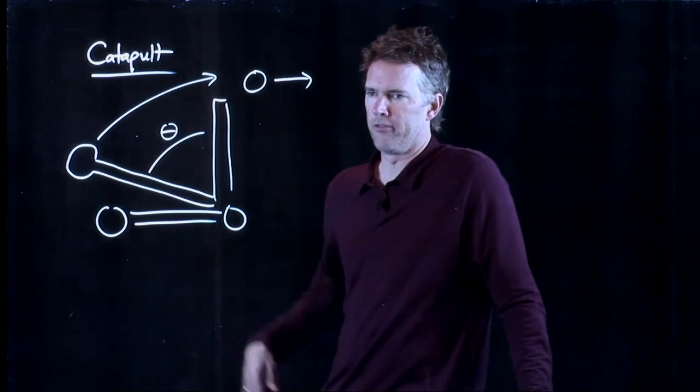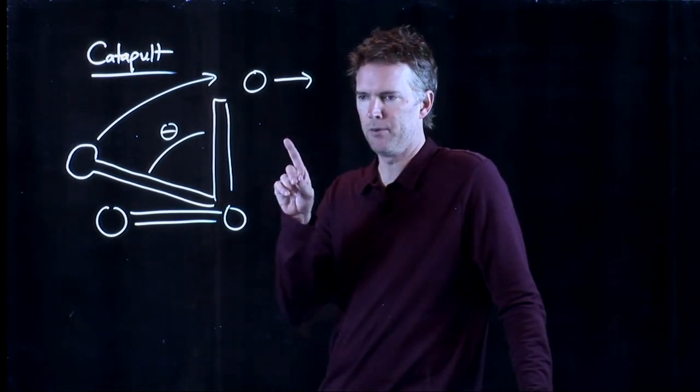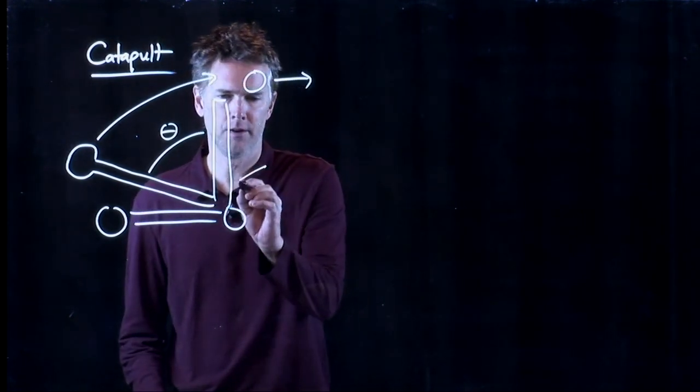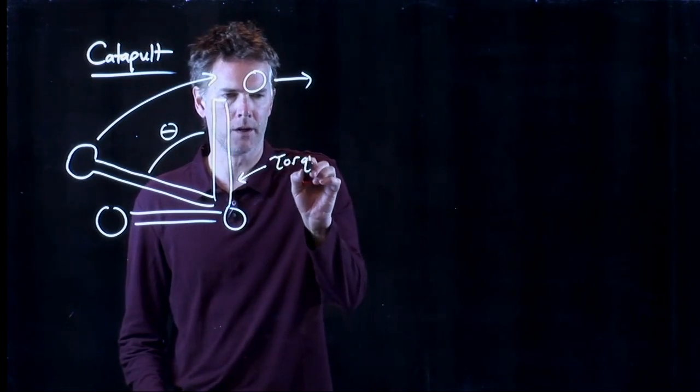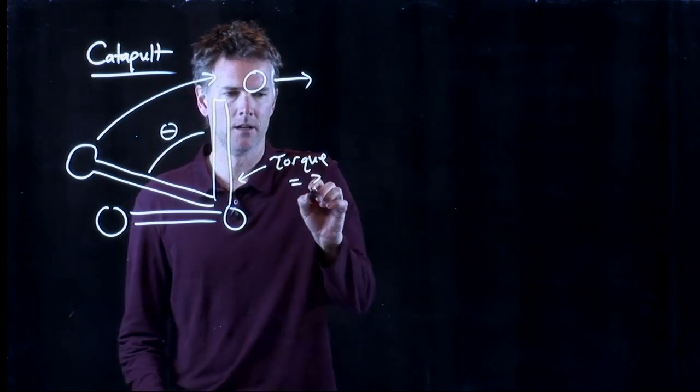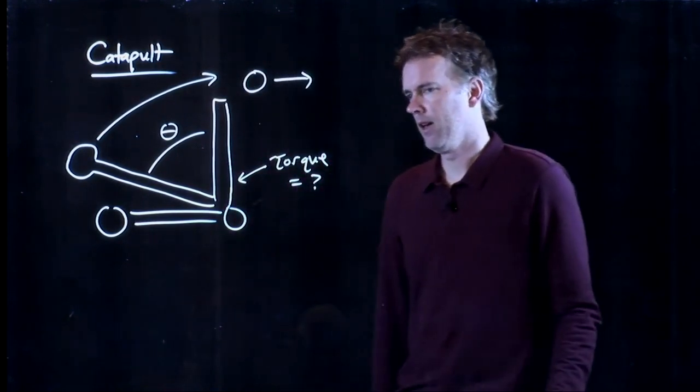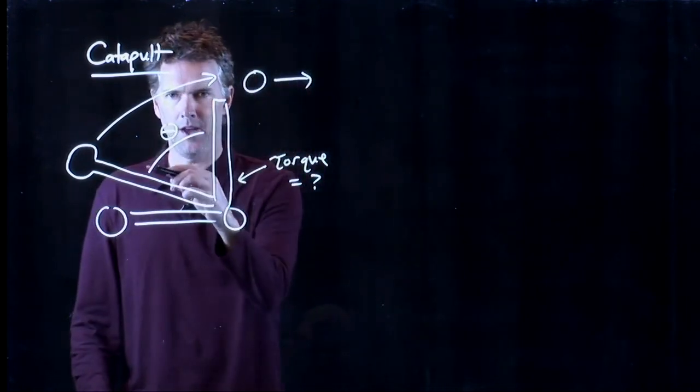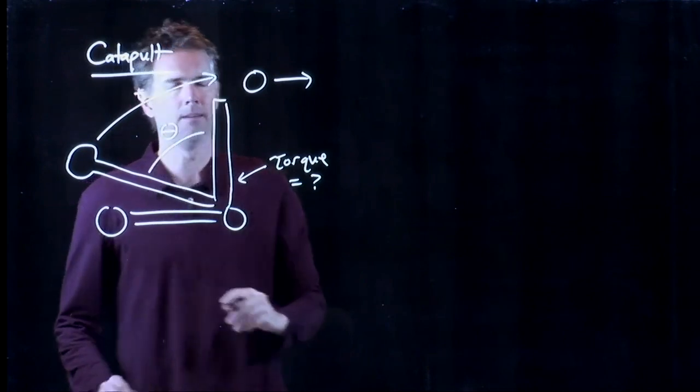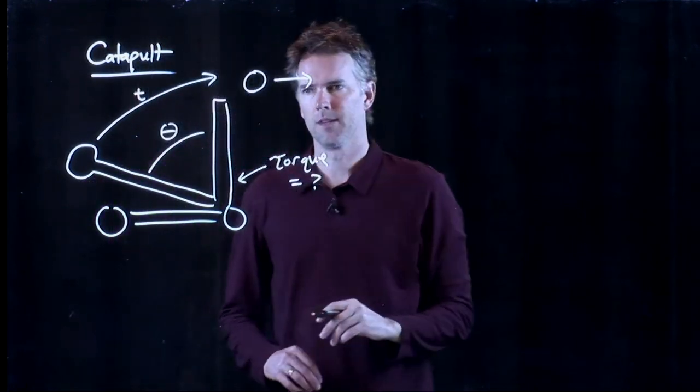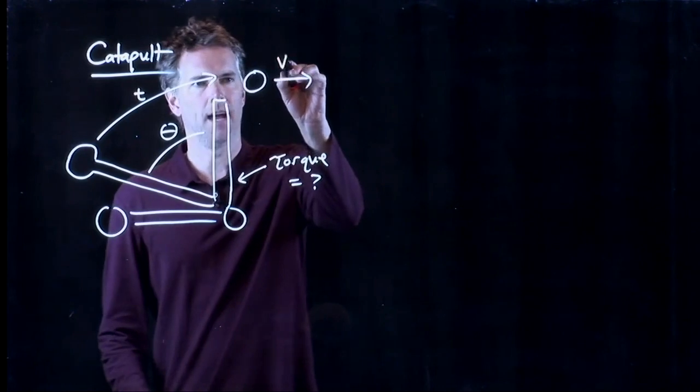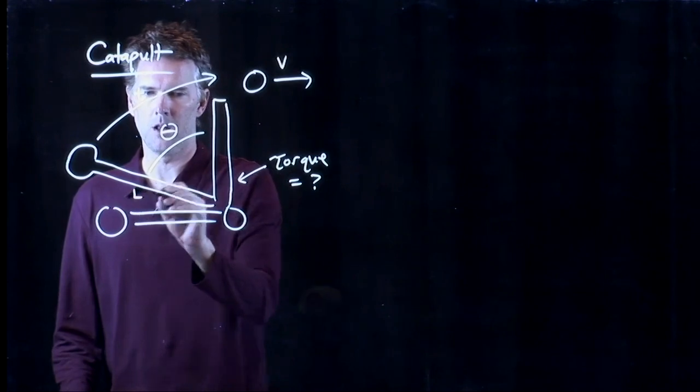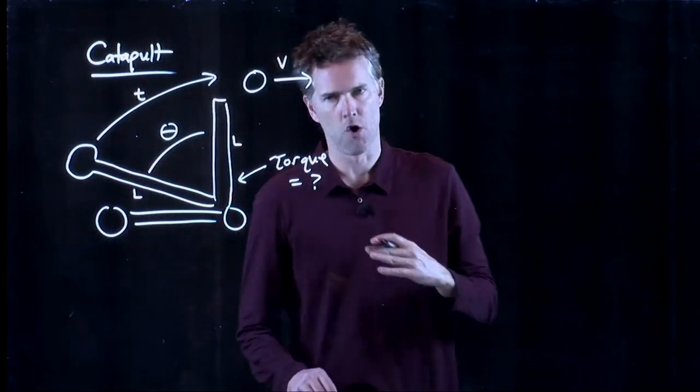So, we're all sort of familiar with this medieval idea of the catapult. Let's see if we can analyze the torque involved here. What is the torque that we need to make this catapult do this? And let's give some other parameters. Let's say that we're going to cover this angle theta in a time t. And then we're going to launch this thing at a speed v. And the catapult has a length to it. We'll call it L. That's the length of that arm.